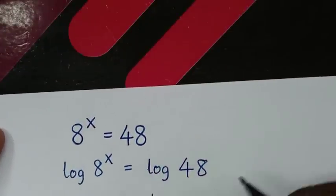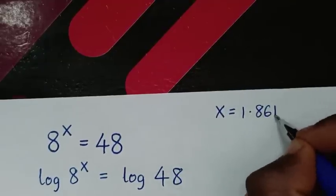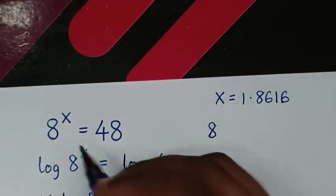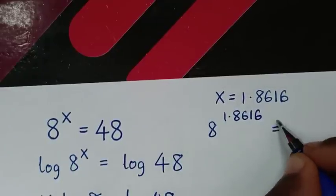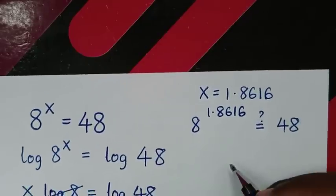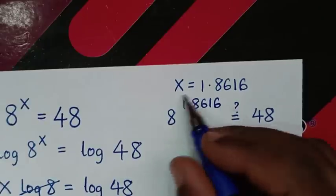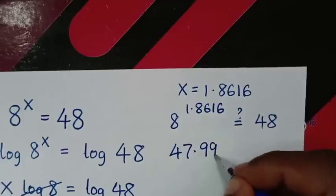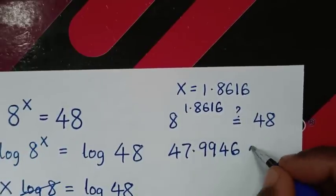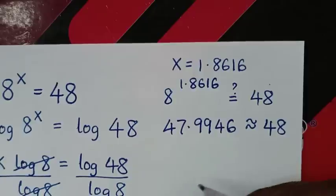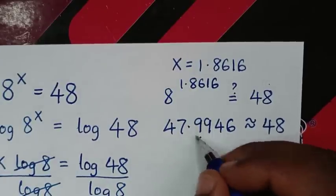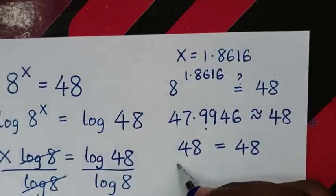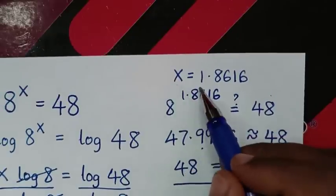Now let's verify this answer. We substitute x = 1.8616 back into the equation: 8 power 1.8616. When we calculate this, it gives 47.9946, which is approximately equal to 48. When we round off to one decimal place, it becomes 48.0, which equals 48. So left side and right side are equal, confirming x = 1.8616 is correct.